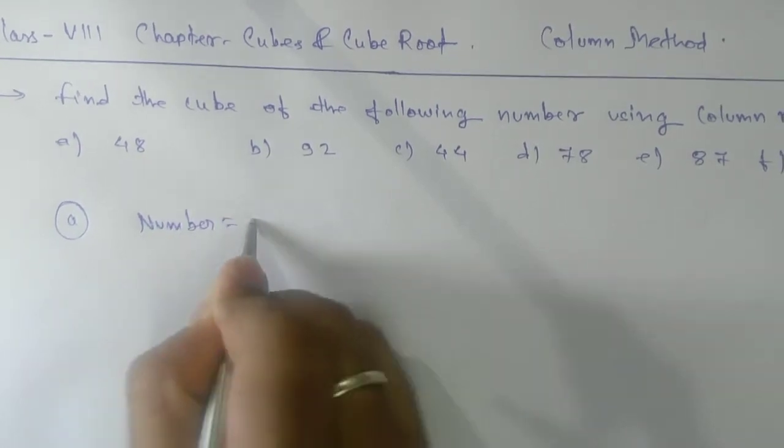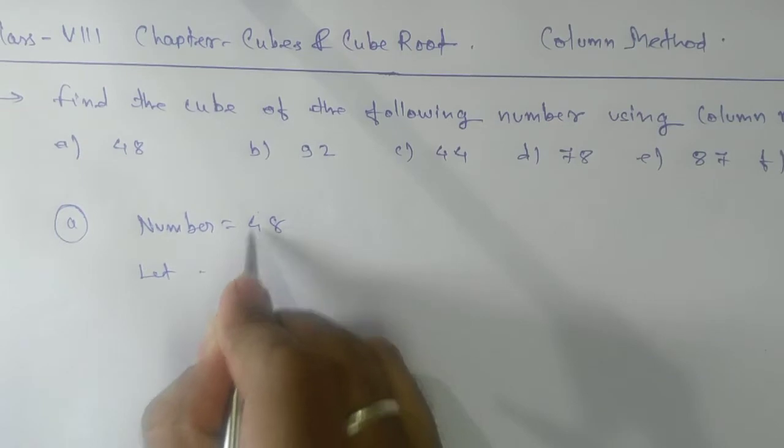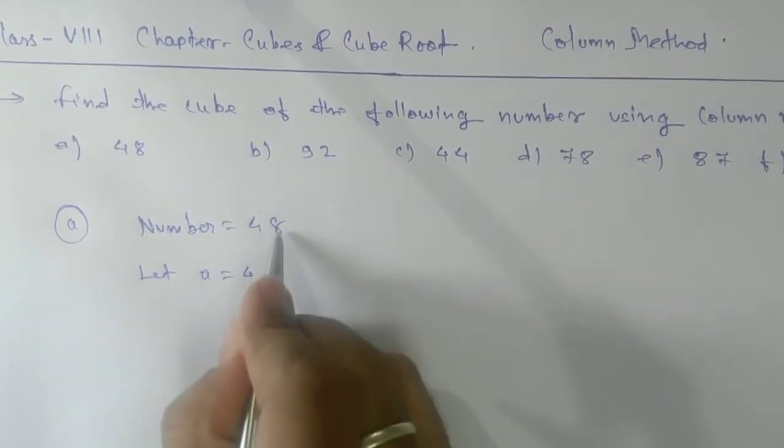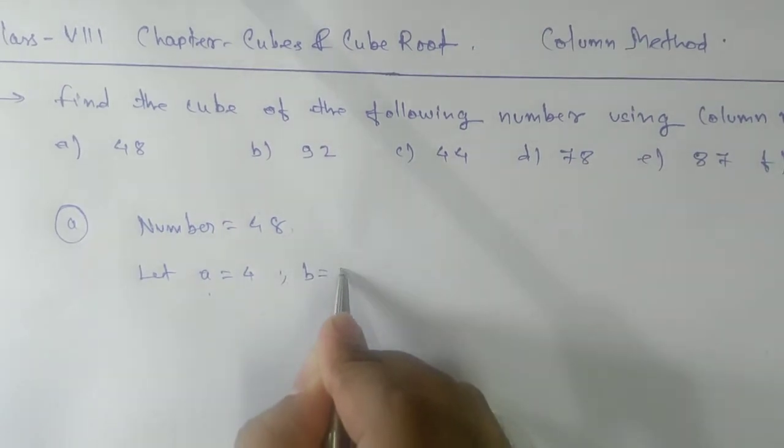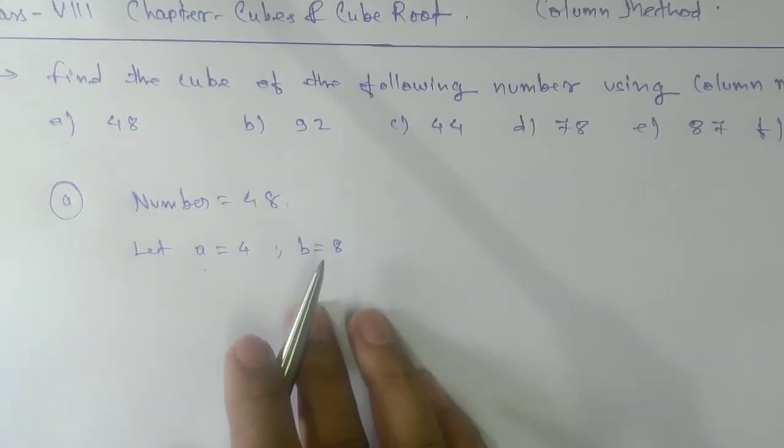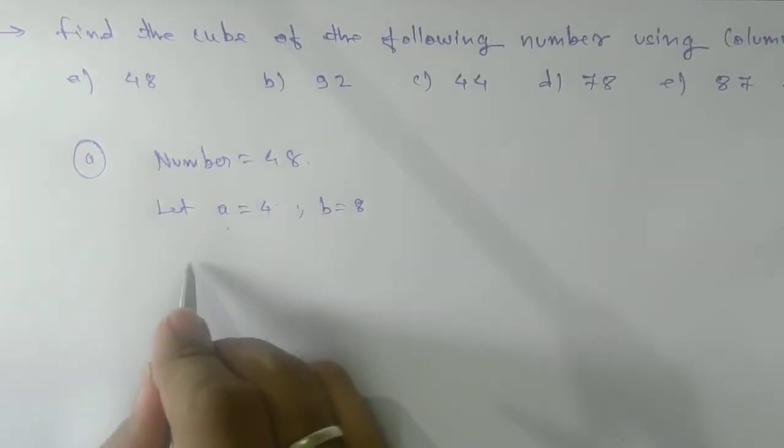Let's take the first number, which is 48. Write it as 48. Let the tens place digit be a equals 4 and the ones place digit be b equals 8. It is fixed, remember.